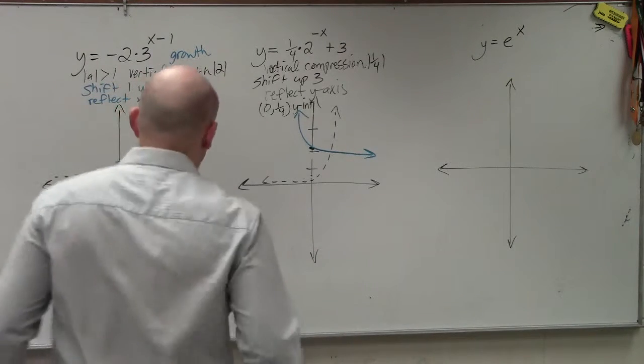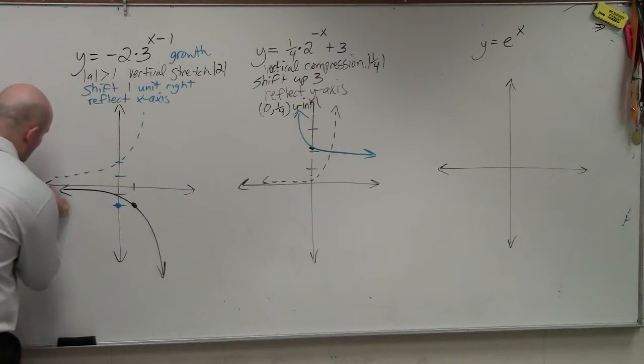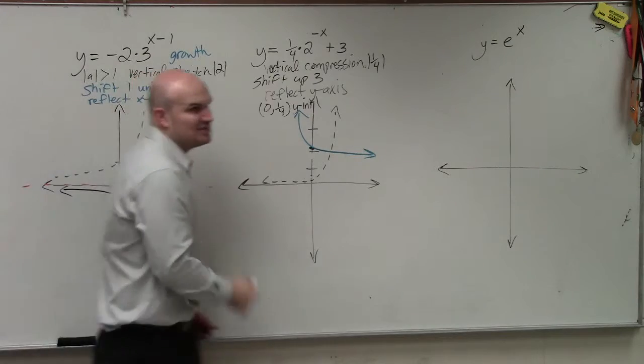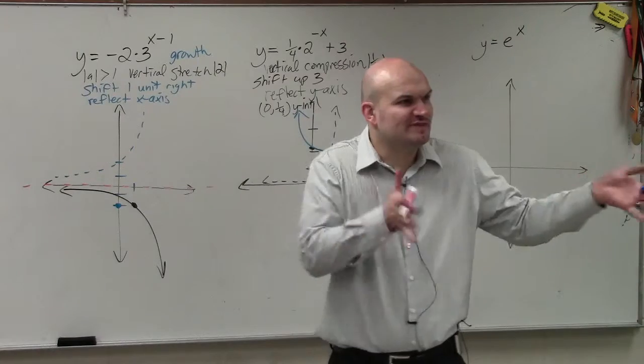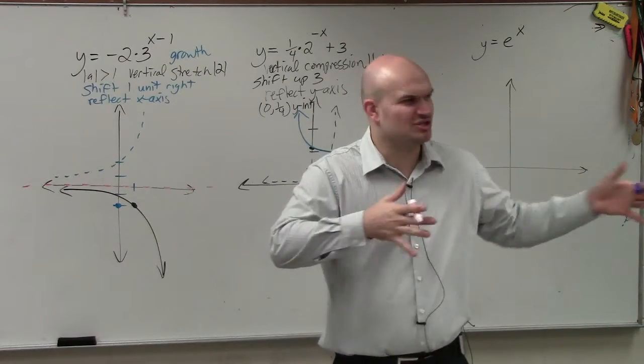The asymptote. Over here, nothing got shifted for the asymptote, right? Because guess what? What did we do with the graph? We just shifted the graph left to right. Asymptote doesn't change when it's horizontal.